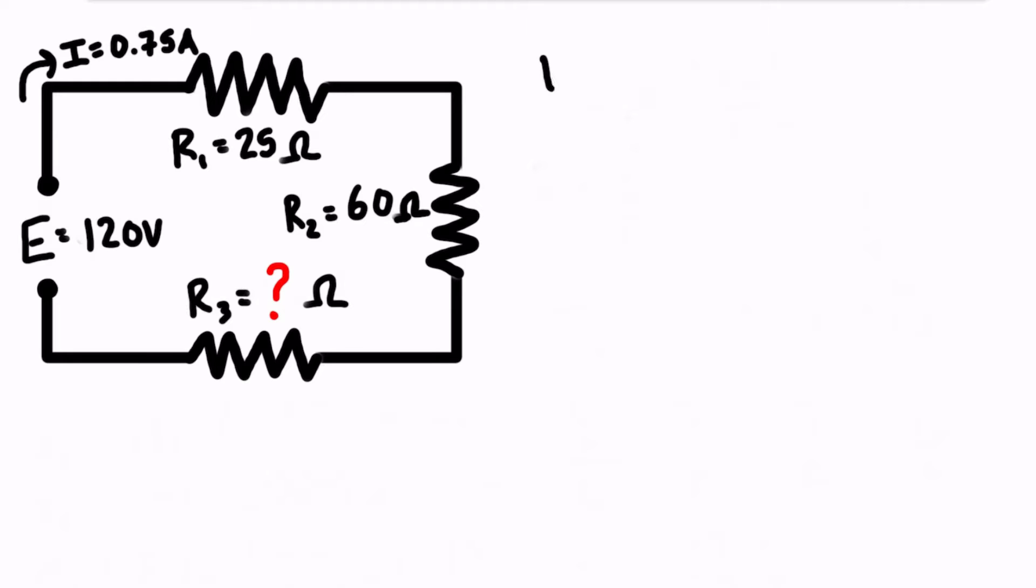So to get started we just want to write down Ohm's law which is V equals IR. We can rearrange this for resistance so we have R is equal to V over I.